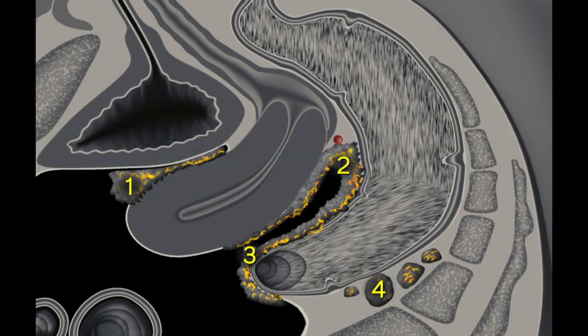This video presents peritoneal spread in the pelvis. We will first look at the anterior compartment, where visceral carcinomatosis is located in the vesico-uterine pouch and on the surface of the bladder, followed by parietal carcinomatosis in the pouch of Douglas, visceral carcinomatosis on the bowel, and mesenterial carcinomatosis.